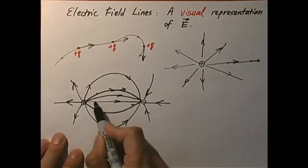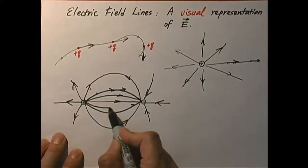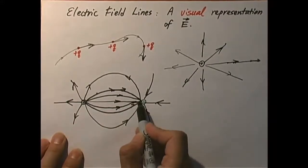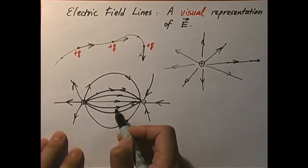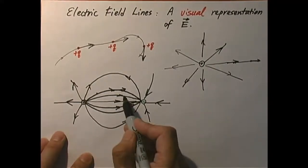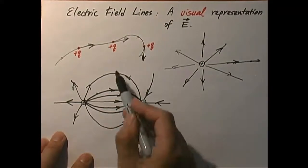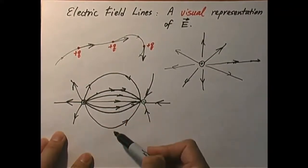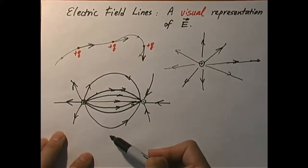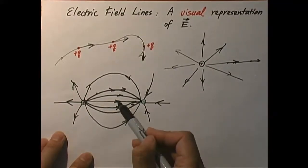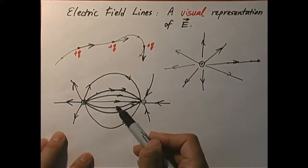I want to draw more lines in this region. The density of the lines will represent — give you a visual representation of the strength of the field. Where the lines are denser, the field is stronger. Where the lines are more sparse, the field is weaker. So it does give you a visual representation of both the strength and the direction of the electric field.